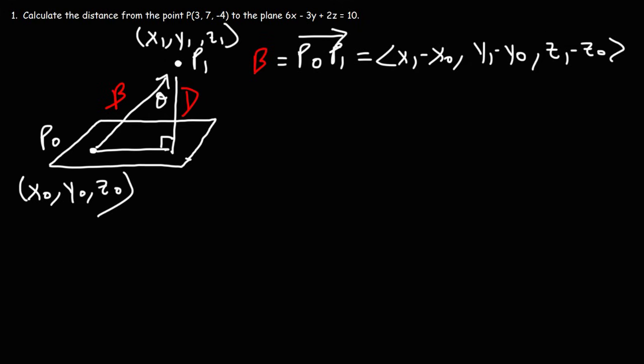Now, in order to define a plane, we need a point on a plane and a vector that's perpendicular to the plane, or the normal vector, which we'll call N.